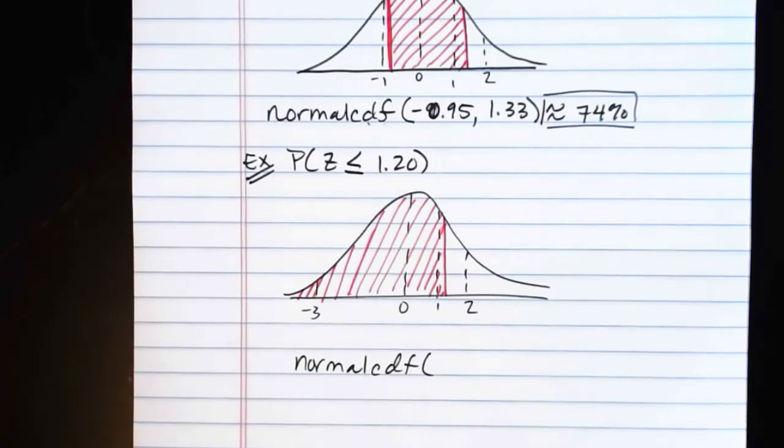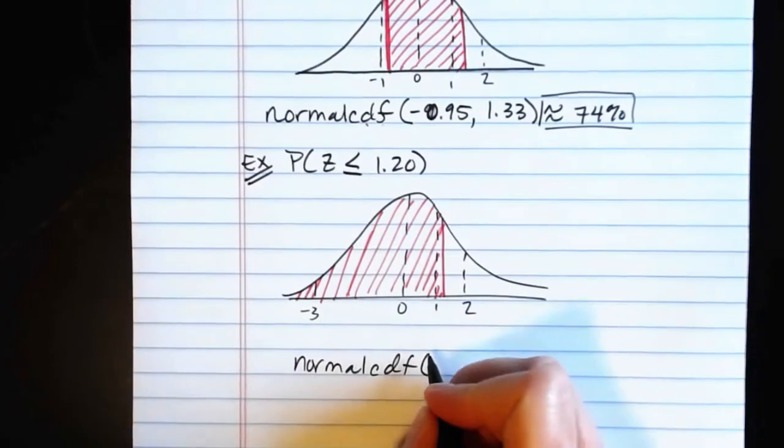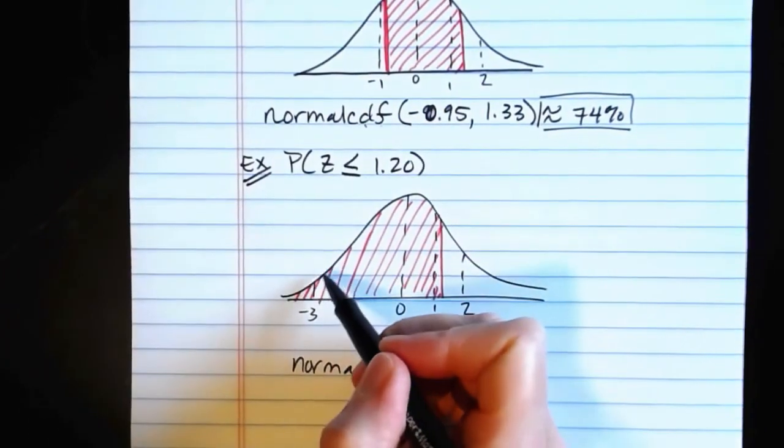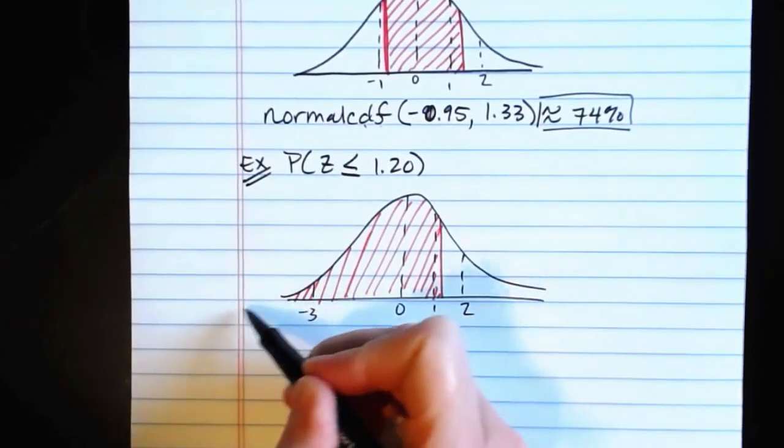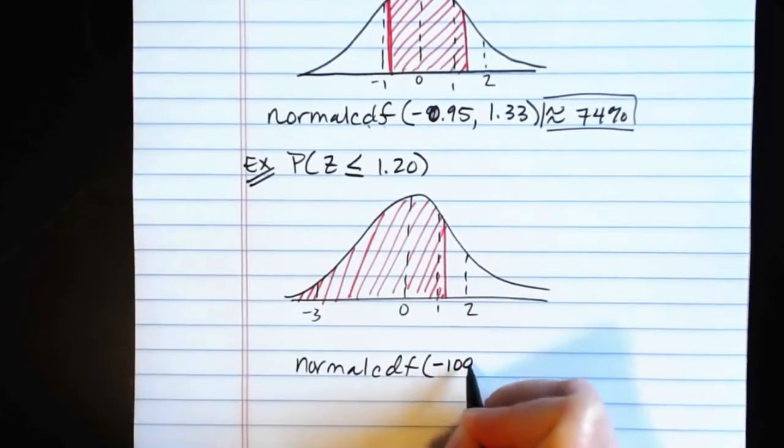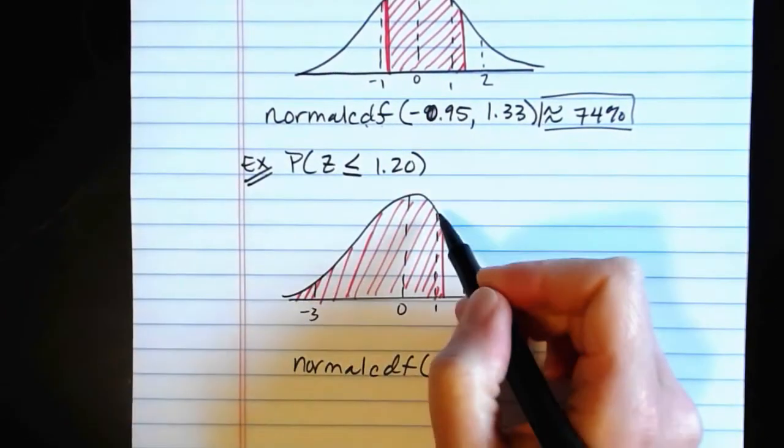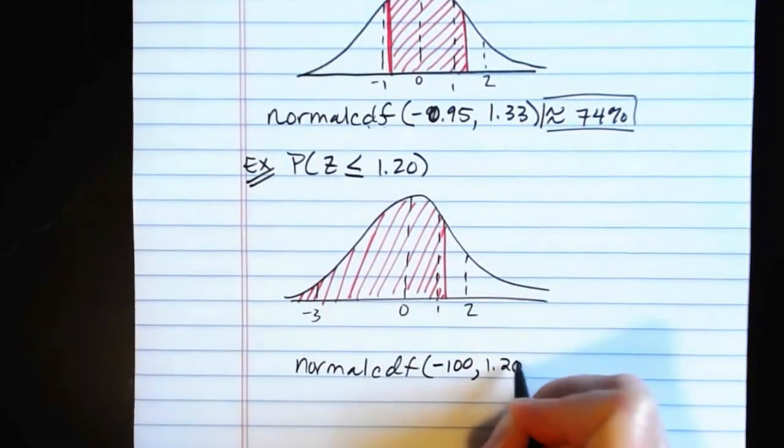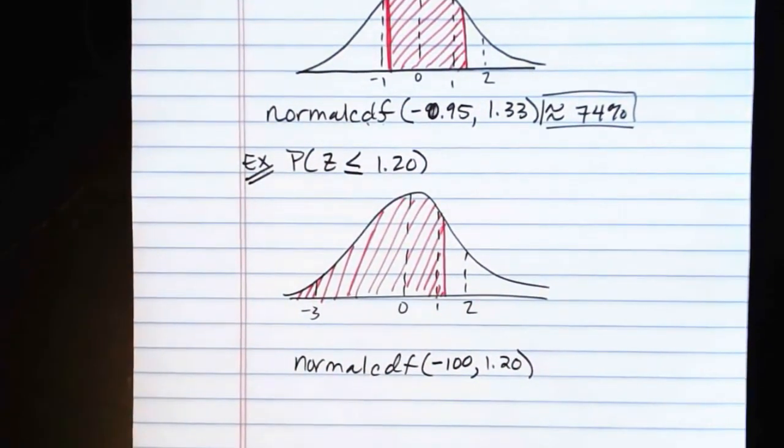Certainly, you could use any sufficiently large value. You could use negative 500, you could use negative 1,000, negative 250. But negative 100 tends to be really convenient. So since we're going all the way to the left, we're starting at that infinite negative value, so negative 100, comma, we're going up to the 1.20, and we would close out that parentheses.